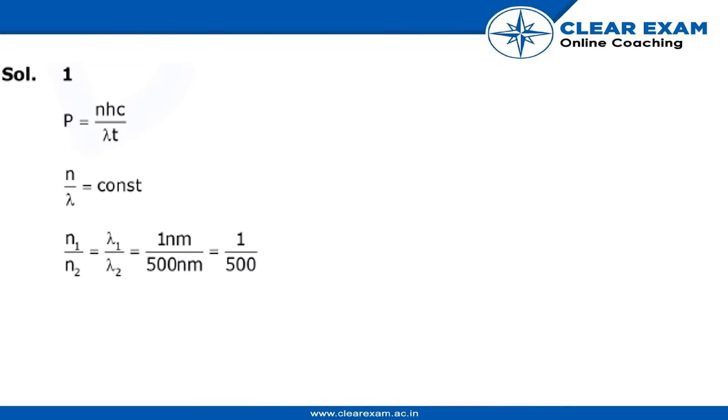To find this answer, we know that P equals nhc by lambda t, where n by lambda is constant. So we would simply remove n by lambda.